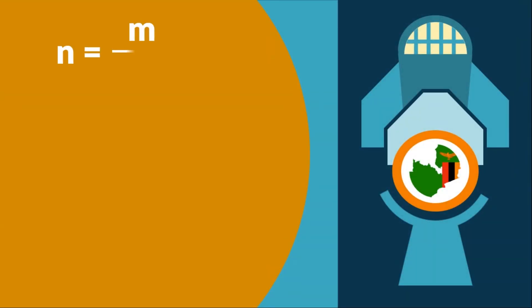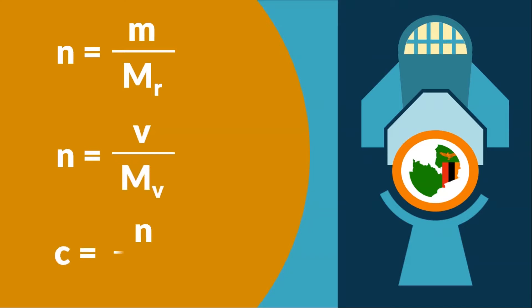I'm sure you've seen some of these formulas when you watched the video about the introduction to the mole concept. These formulas are very useful when talking about the topic of stoichiometry. You should not only be able to remember these formulas, but also know how they are related to each other, because as you can see, all of them have n, meaning there's a relationship shared among these formulas.